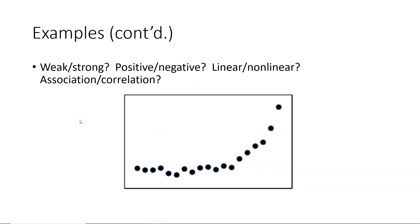In this second example, we would say the relationship is definitely strong — there is a definite pattern to the dots. We would say it is positive because the dots tend to go upward from left to right. It is nonlinear because the dots don't form a straight line, and in this case we would say it is an association because there is not a linear relationship displayed by the dots.